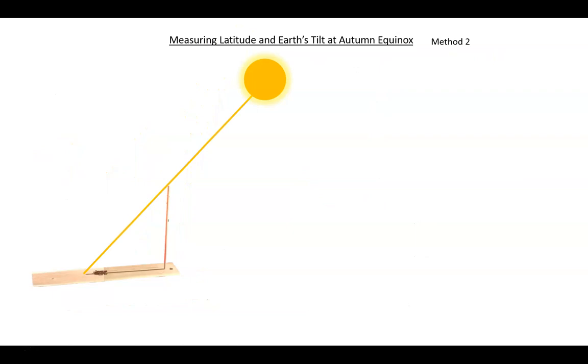Method 2. At the autumn or spring equinox, we can measure the latitude of our location as well as the earth's tilt. Let's first see how to determine our latitude experimentally, as opposed to looking it up on the internet. Here is the information obtained on the day of the autumn equinox, September 23, 2019.